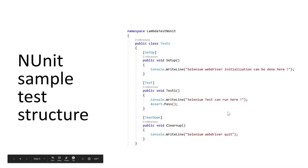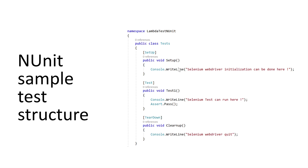The actual test itself is where we perform our real test actions — for example, a Selenium test for a login operation, filling user details, or settings operations. This is also where we perform our assertion operations. All these methods are decorated with attributes like the Setup attribute, Test attribute, and TearDown attribute. This is the basic NUnit sample test structure.